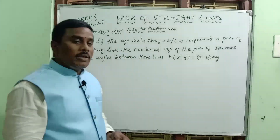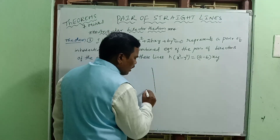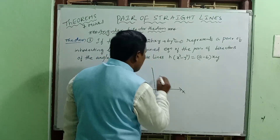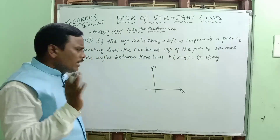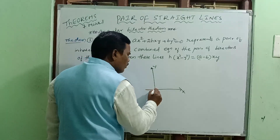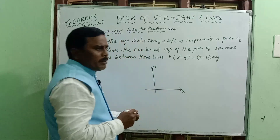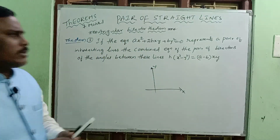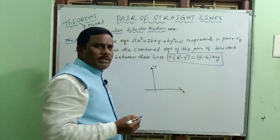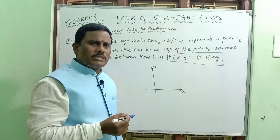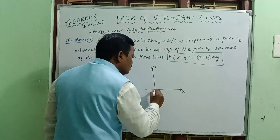These lines are very important. We will do two simple models based on the diagram. From the diagram, we can understand. The theorem is: h into x square minus y square equal to a minus b into xy. This is the angular bisector theorem — a very important formula.